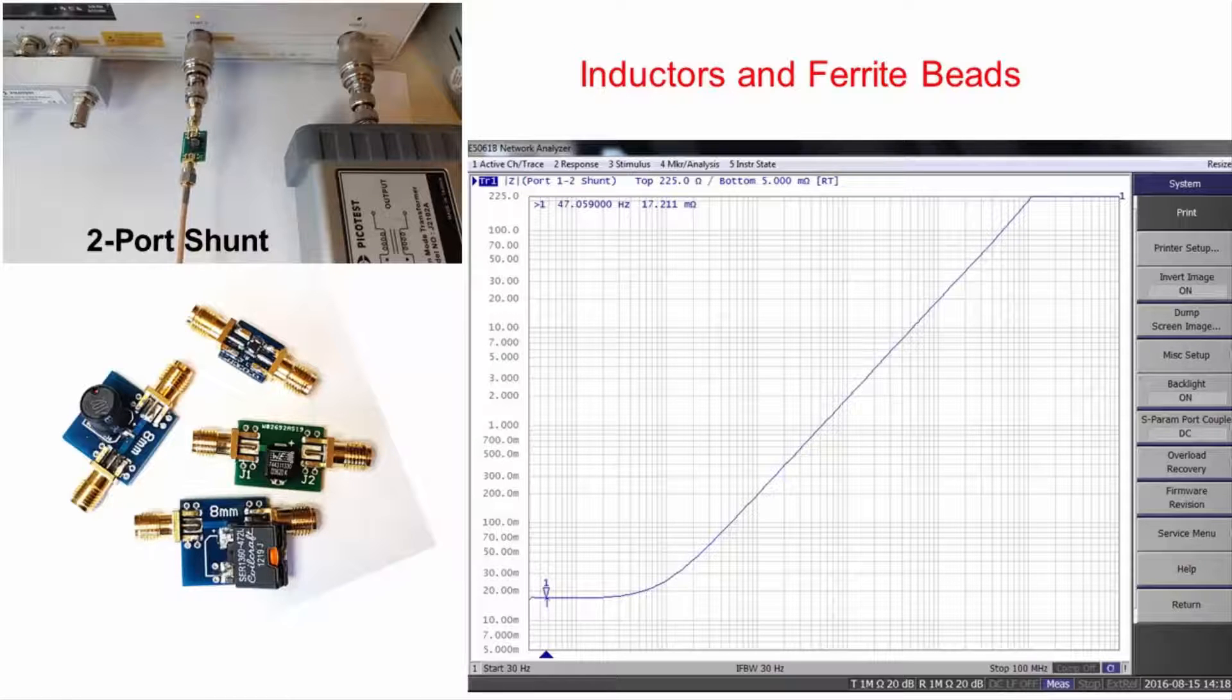The impedance of this particular worth inductor ranges from 17 milliohms at DC to more than the 225 ohm maximum measurement limit. Inductors and ferrite beads routinely exceed this 225 ohm limit at high frequency.